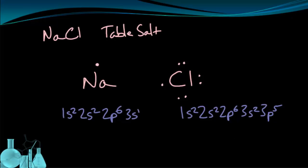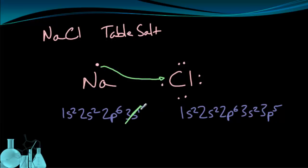Well, here's what I can do. Sodium can give its electron to chlorine, or chlorine takes it from sodium — whichever way you want to look at it. Here's what that does: if sodium loses that one electron, it loses the 3s1. That puts it at a full second principal energy level, S and P sublevels — so 2 and 6, eight total valence electrons. So sodium is good now.